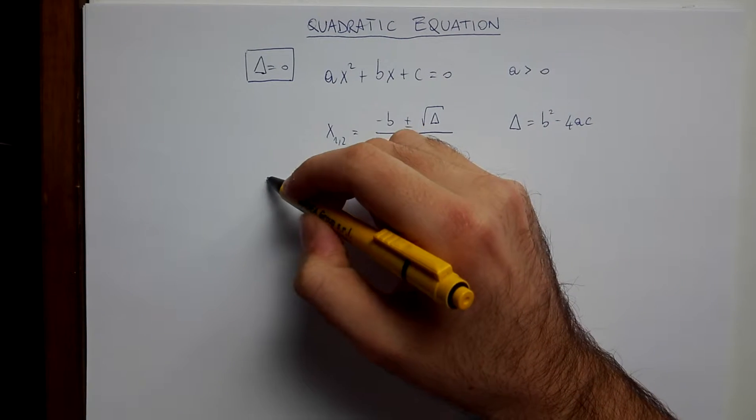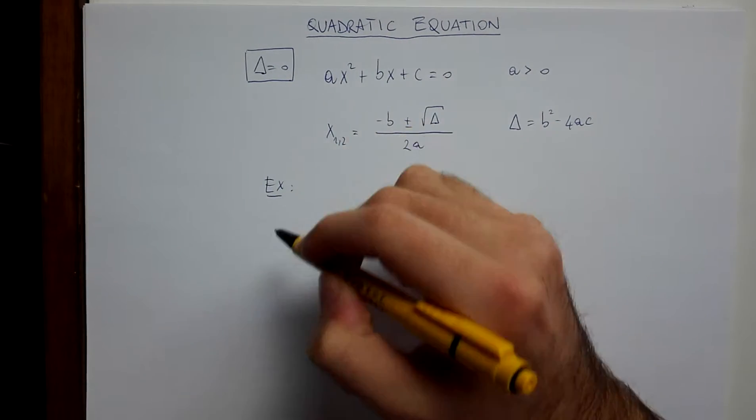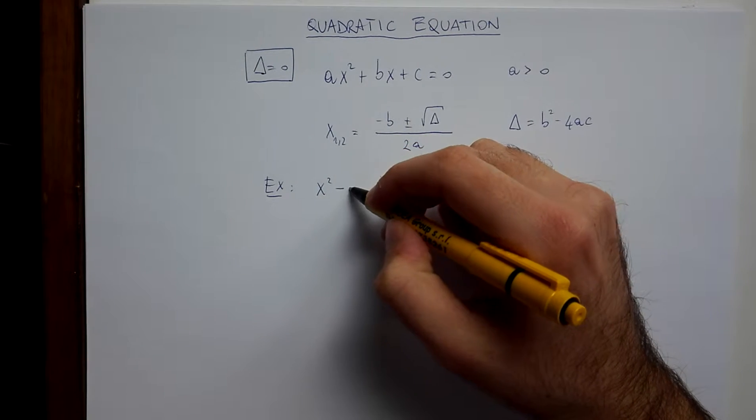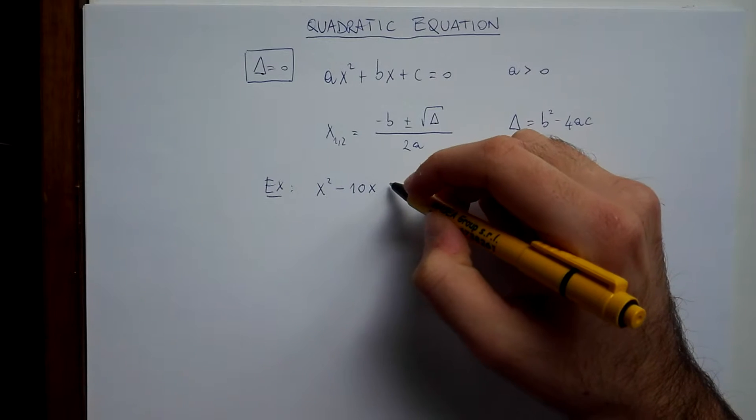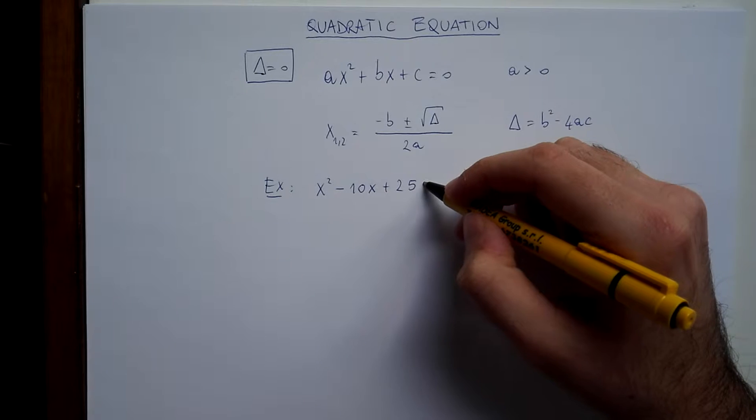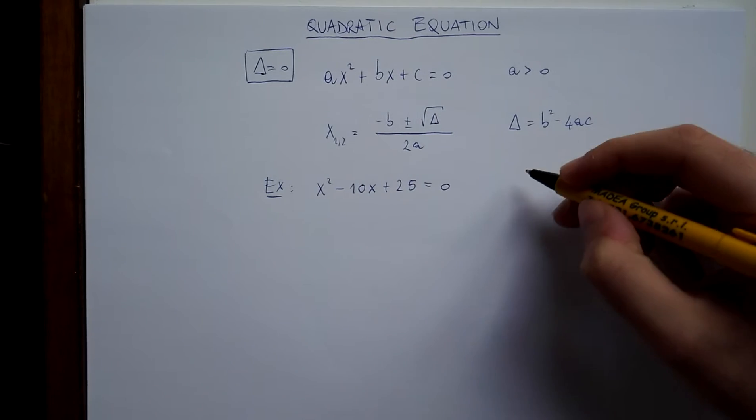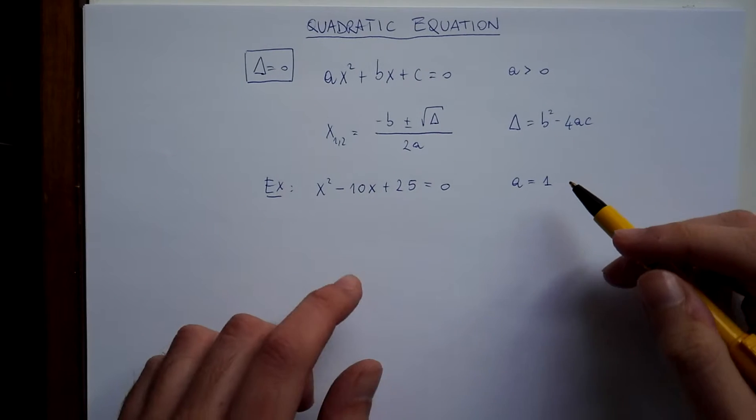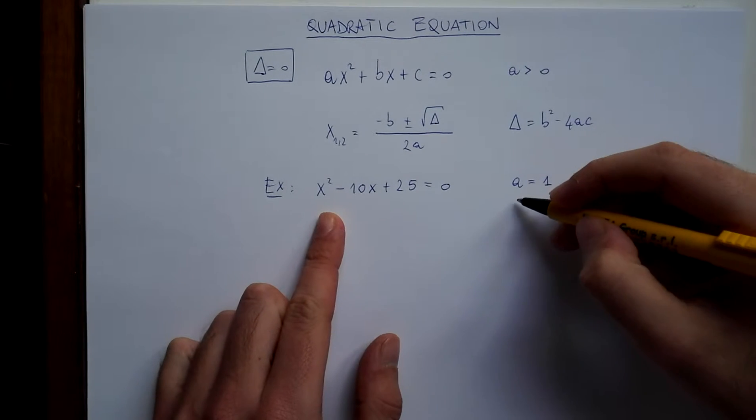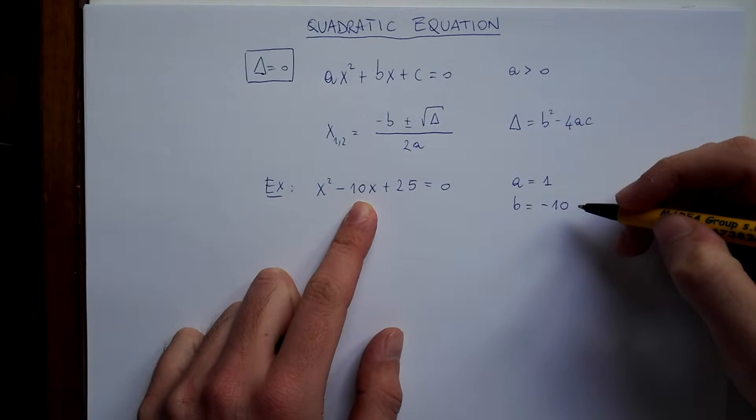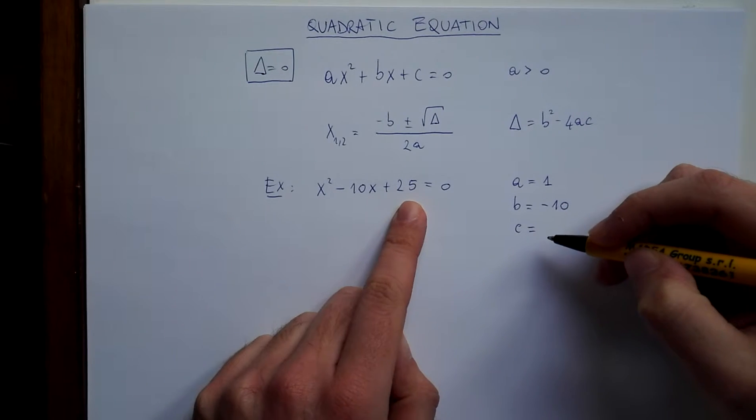So let's do an example. Consider x squared minus 10x plus 25 equals zero. So we have that a is 1, the coefficient of x squared, b is minus 10, the coefficient of x, and c is 25.